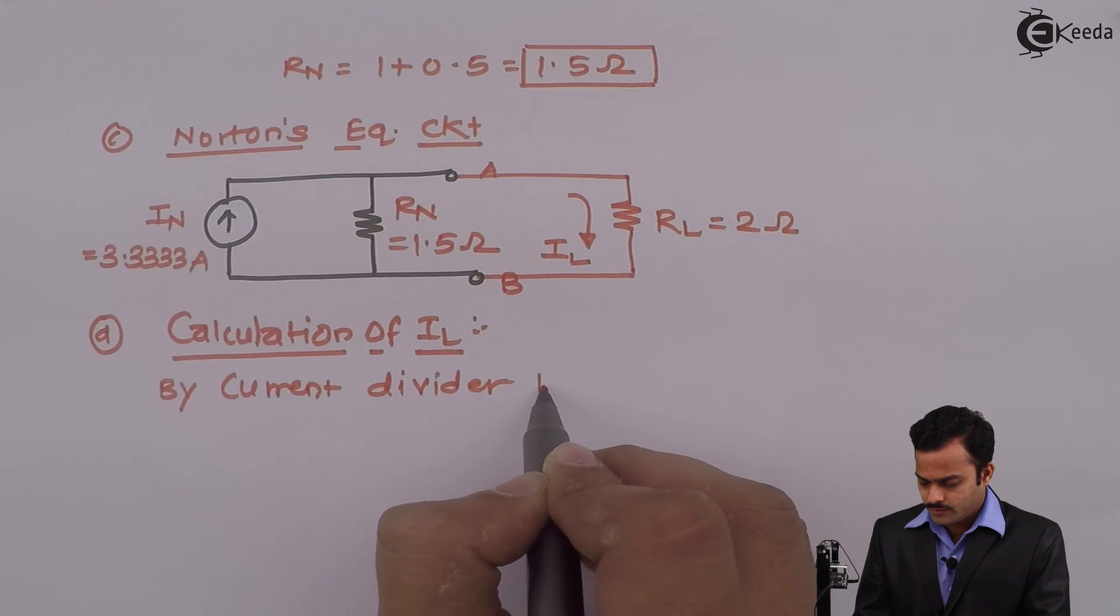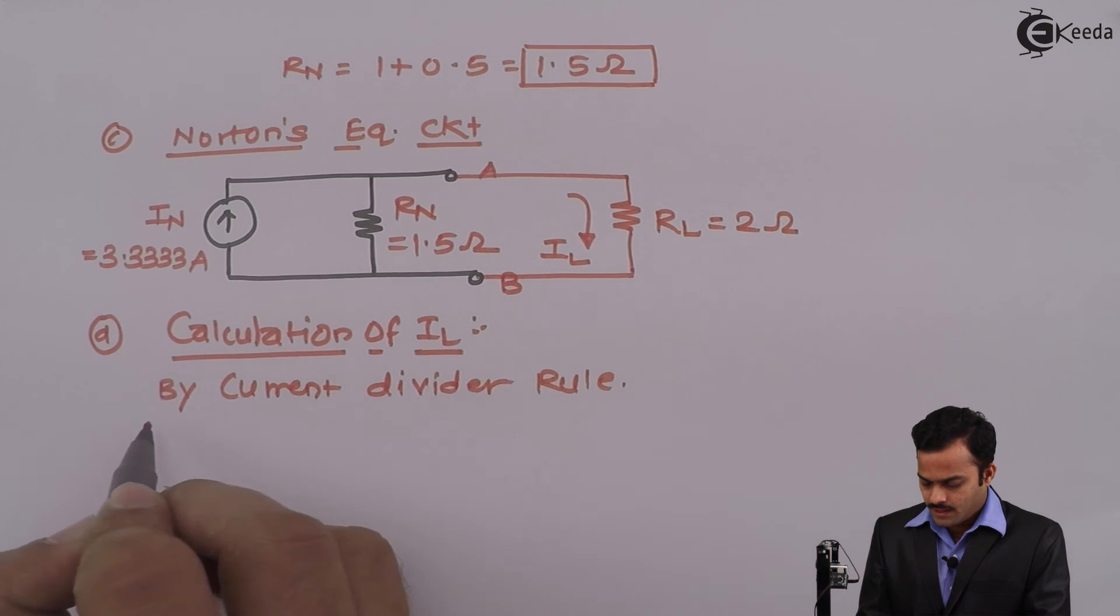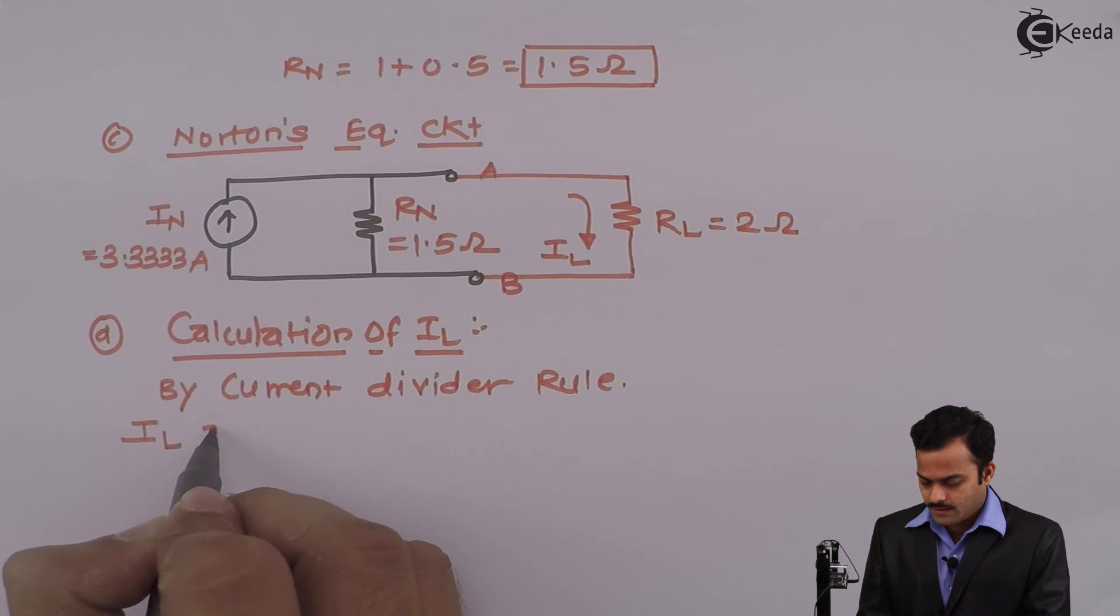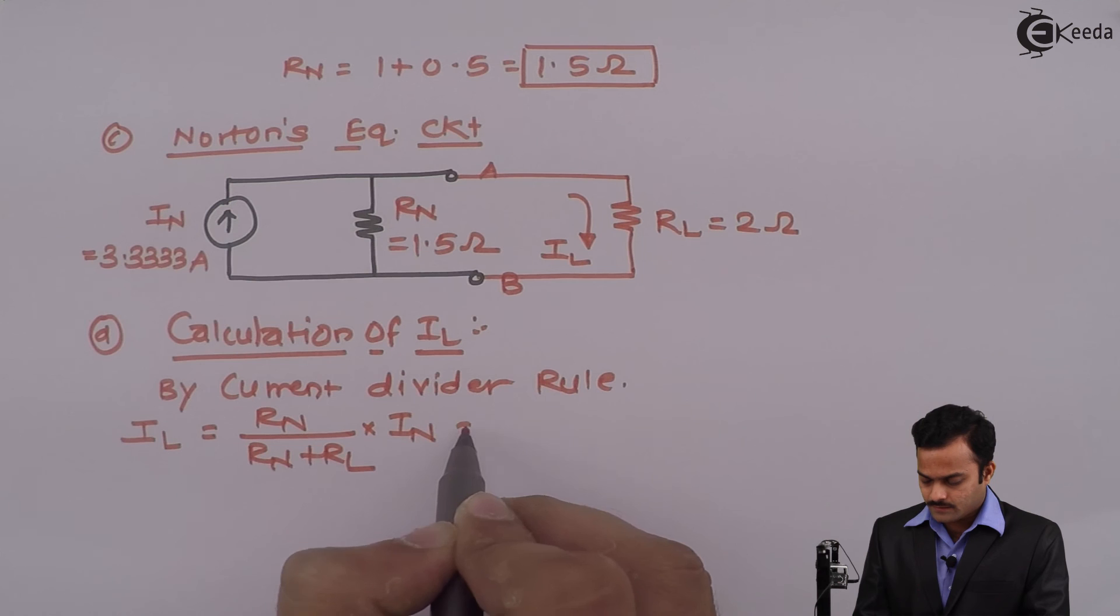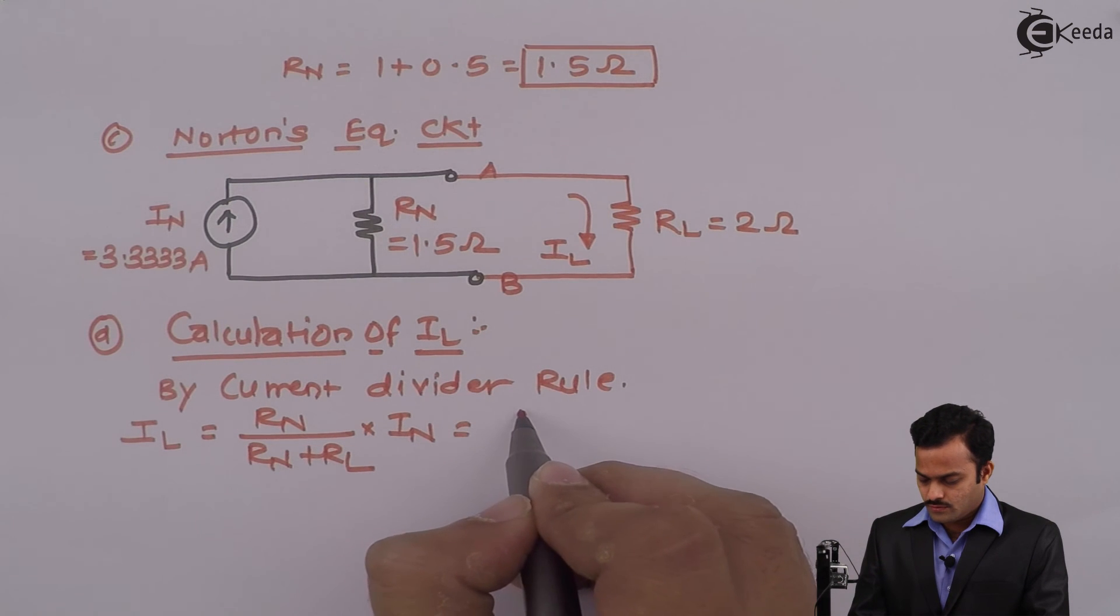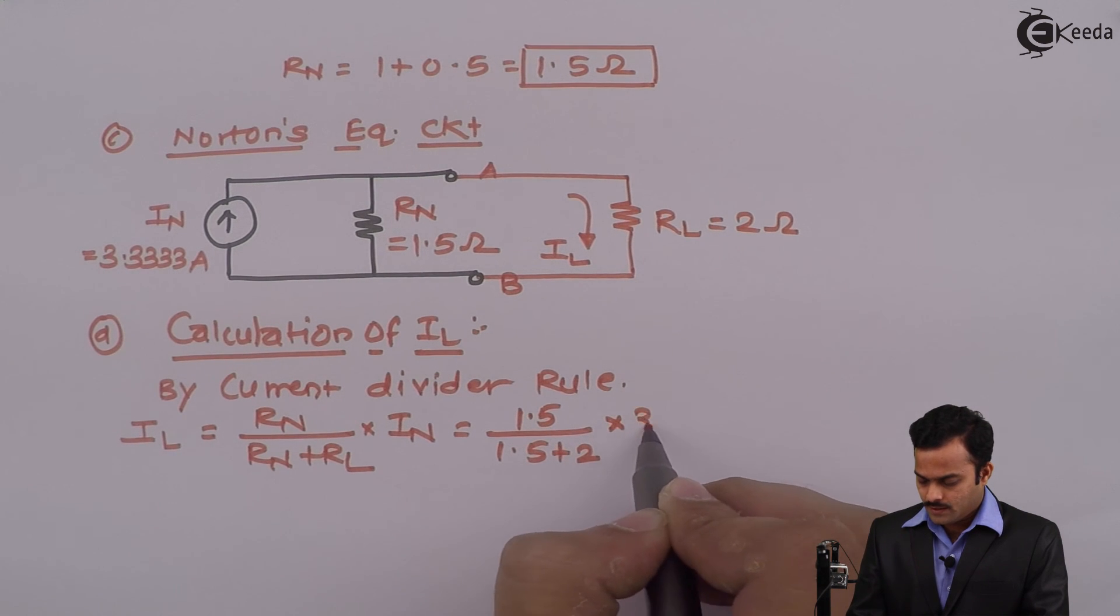So by current divider rule I can say IL equal to RN divided by RN plus RL multiplied by IN. So it is 1.5 divided by 1.5 plus 2 multiplied by 3.3333.